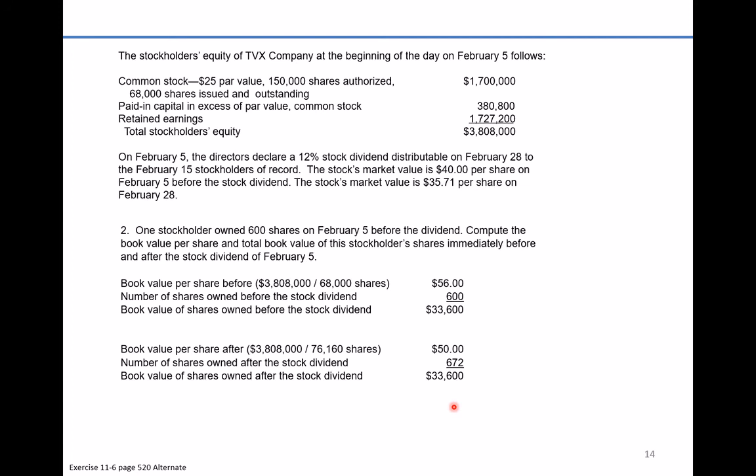The book value stays the same because a stock dividend simply moves numbers around on the equity side of the balance sheet. The stock dividend comes out of retained earnings and is moved up into common stock. Therefore, the total book value before and after the dividend stays exactly the same.